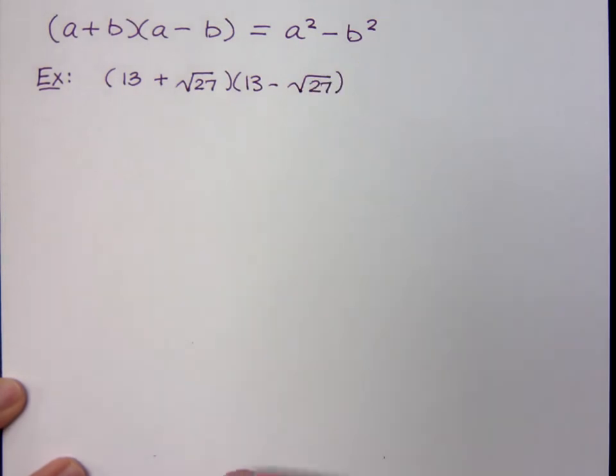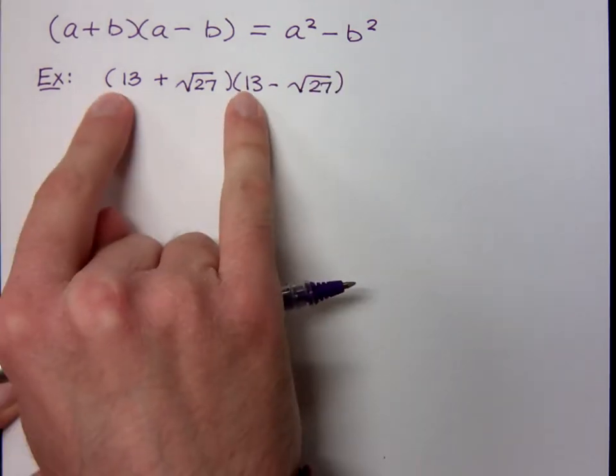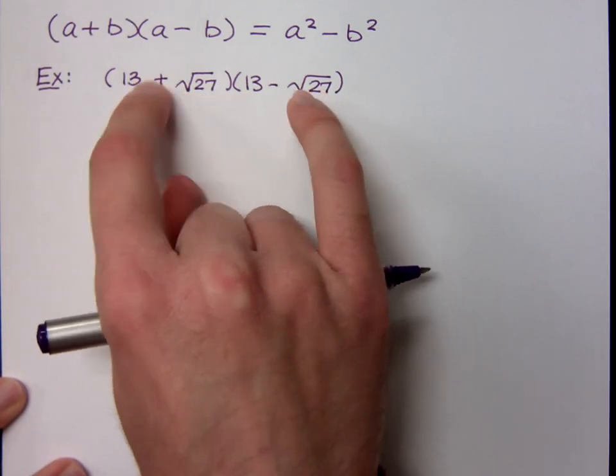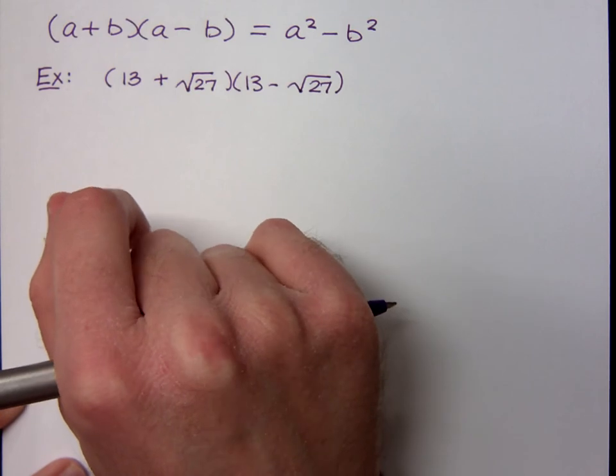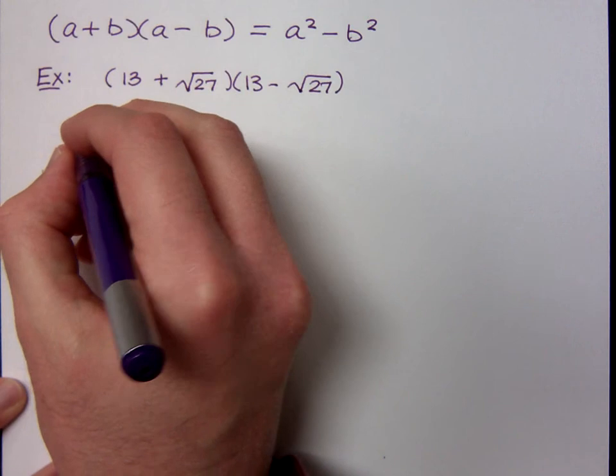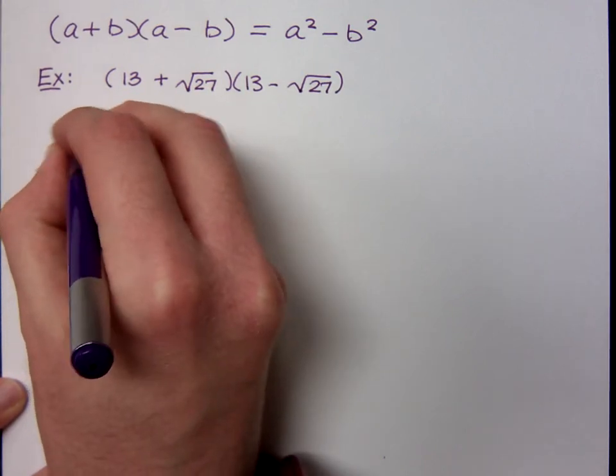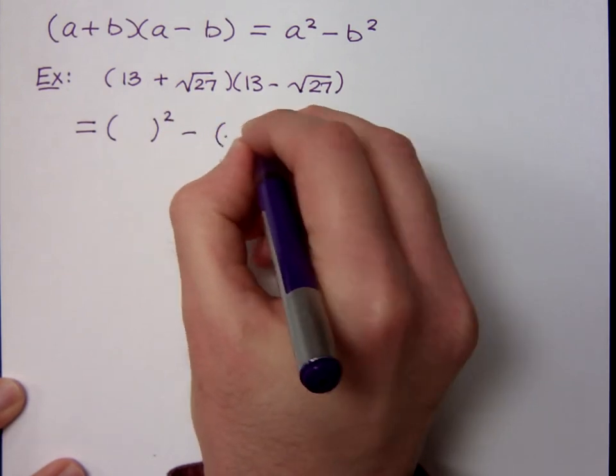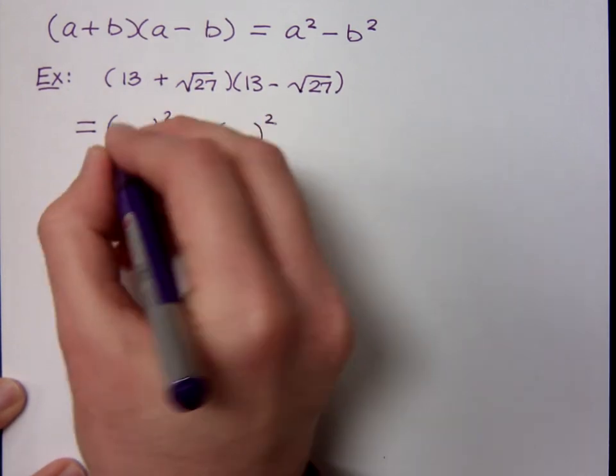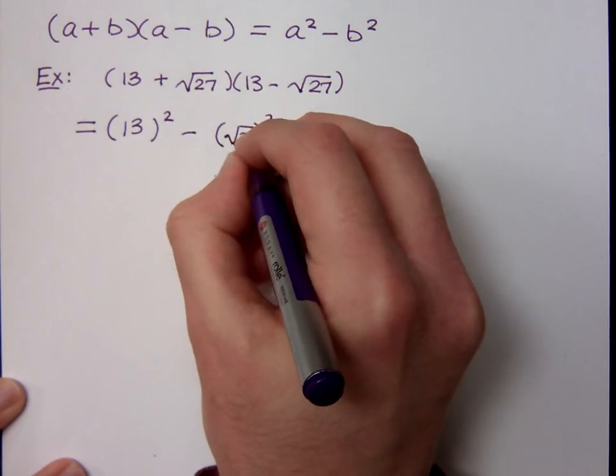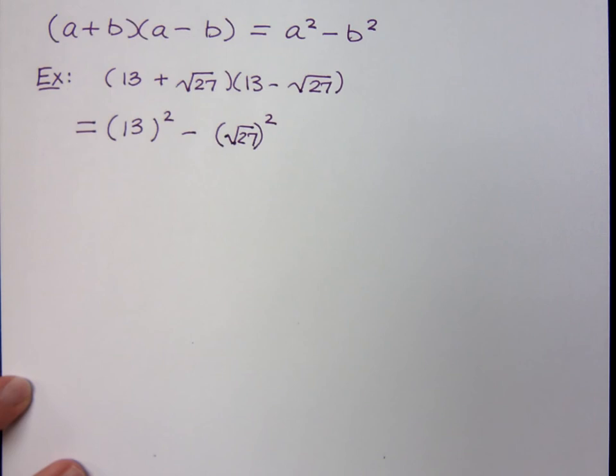Same way. This should just give me the difference of squares, right? Yeah. Because the first terms are the same, the second terms are the same except for the sign, which is what gives us. So if I apply this special product that we learned a long time ago, you're going to have 13 squared in one, and the square root of 27 squared in the other. Right?